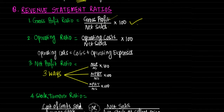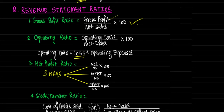Next is operating ratio, calculated as operating costs divided by net sales into 100. Operating costs include cost of goods sold (COGS) plus operating expenses. It expresses the relationship between each item of expenditure and sales, and brings out the relationship between elements of operating cost and net sales. Its significance is that it enables management in controlling costs and improving profitability, as well as helping auditors and the income tax department judge the correctness and reliability of various expenses.